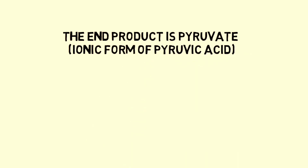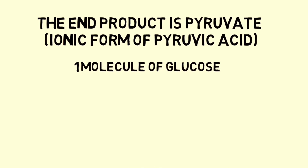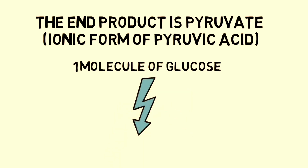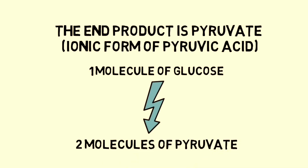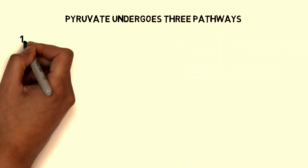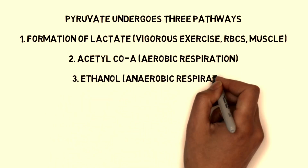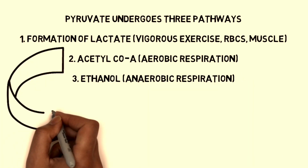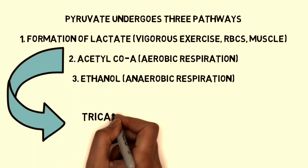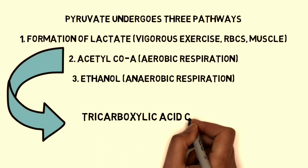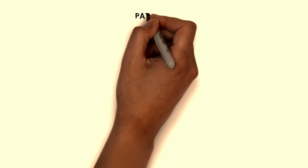If you see, one molecule of glucose when it undergoes glycolysis, the resulting product will be two molecules of pyruvate. The pyruvate produced undergoes three types of pathways: number one, formation of lactate; second, conversion to acetyl coenzyme A; and third, ethanol formation in the anaerobic respiration process. Acetyl coenzyme A undergoes the tricarboxylic acid pathway, also known as the Krebs cycle.